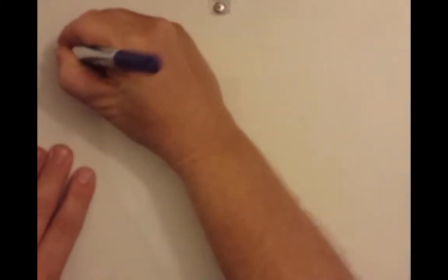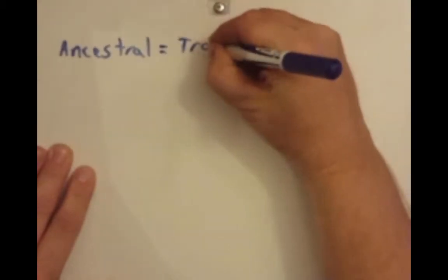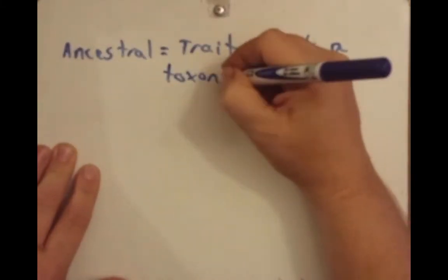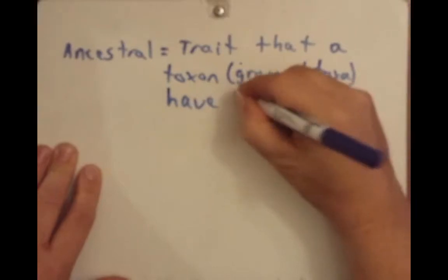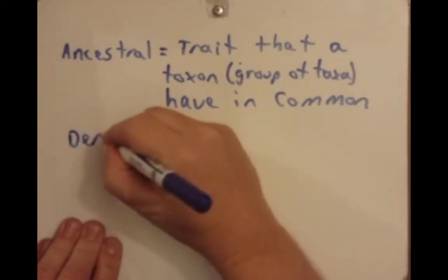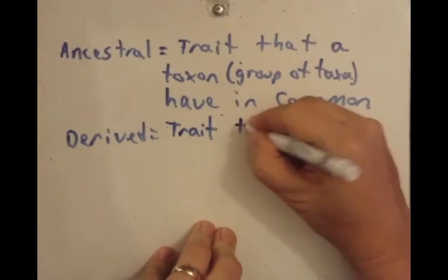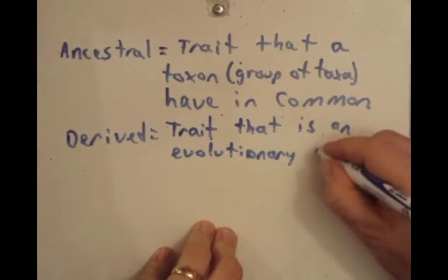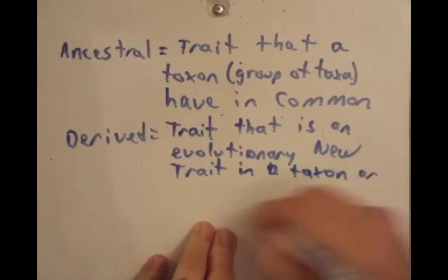Let's first compare and contrast ancestral and derived traits. An ancestral trait is a trait that a taxon, or group of taxa, have in common. A derived trait is a trait that is an evolutionarily new trait in a taxon or a group of taxa.